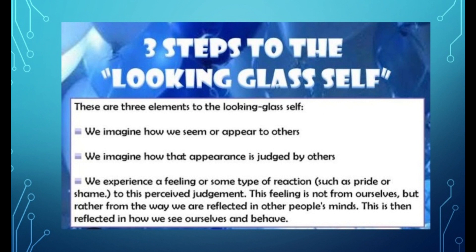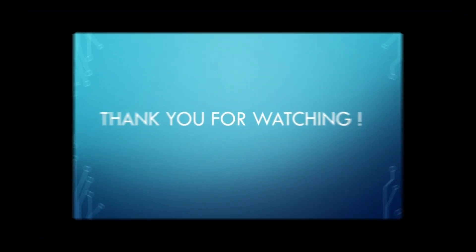یہ تین steps of Looking Glass Self ہیں: first, we imagine how we would appear to others — ہم نے اپنی imagination بنانی کہ دوسرا ہمیں کیسے دیکھ رہا ہے؛ second, we imagine how that appearance is judged by others؛ and third, we experience a feeling — some type of reaction — ہم pride feel کریں گے یا shame feel کریں گے۔ یعنی کہ ہم نے خود کو خود judge نہیں کرنا — جو ہماری society نے جو دوسرے person کا خیال ہونا ہے، ہم نے اس کی بنیاد پر اپنے آپ کو perceive کر لینا ہے۔ Thank you for watching۔